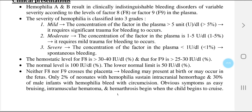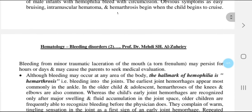The hemostatic level for factor 8 is more than 30 to 40% and for factor 9 is more than 25 to 30%. The normal level is 100% and the lower normal limit is 50%. Neither factor 8 nor factor 9 crosses the placenta, so bleeding may present at birth. Only 2% of neonates with hemophilia sustain intracranial hemorrhage, and 30% of male infants with hemophilia bleed with circumcision.